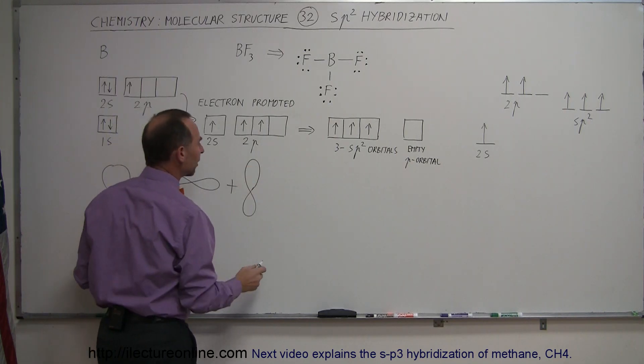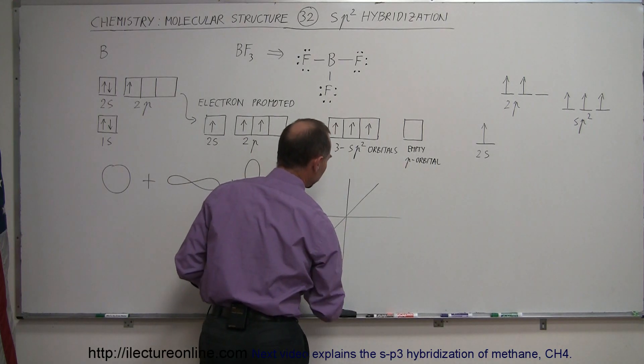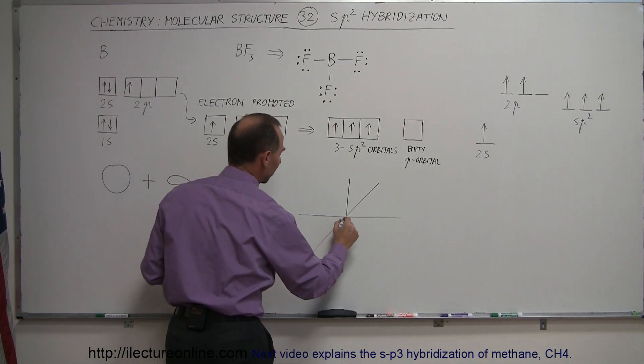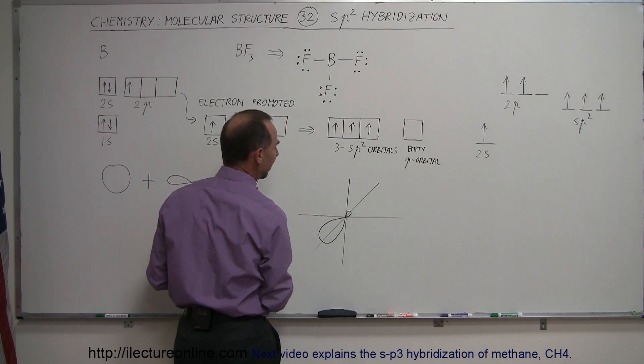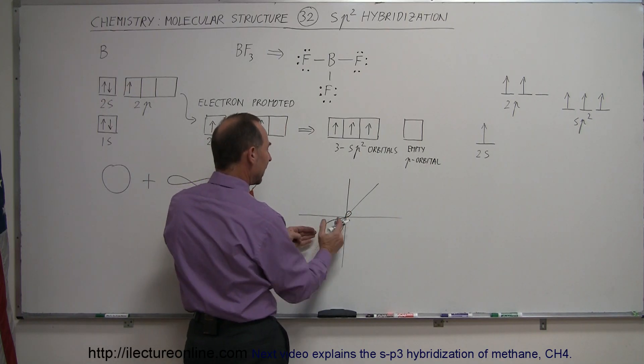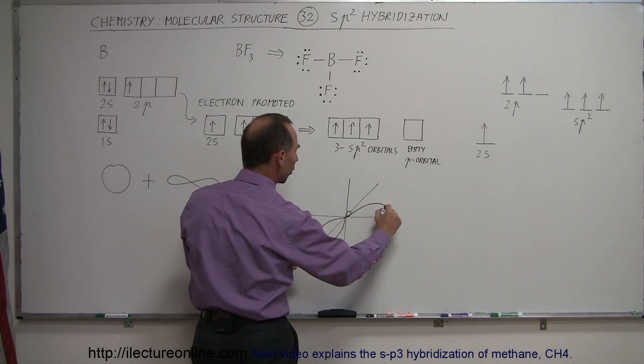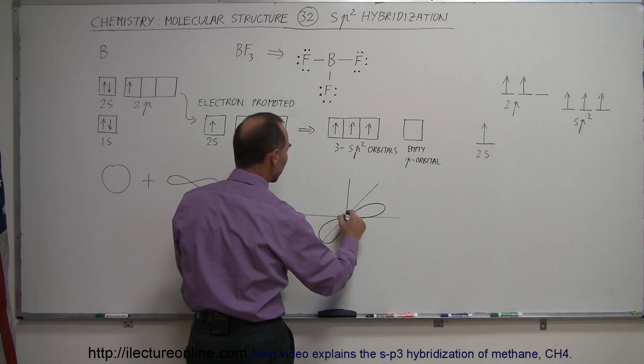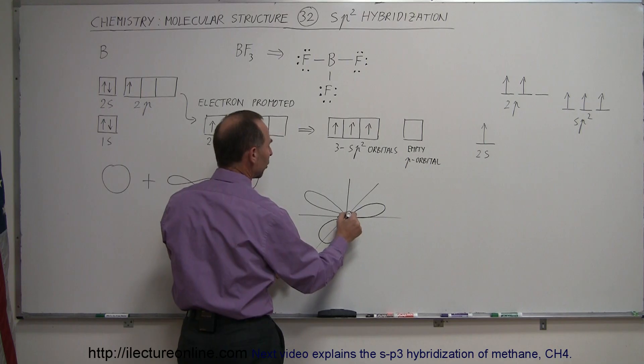And you morph them together, and you end up with a situation like that in the plane, where you have one orbital coming out like this with a large lobe and a small lobe at the end. Then at a 120 degree angle, you have another large lobe coming this way with a small lobe coming out here, and another 120 degrees in this direction, you have another large lobe coming this way with a small lobe coming this way.